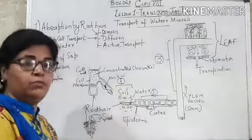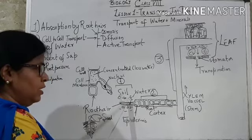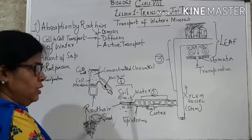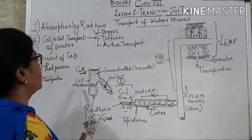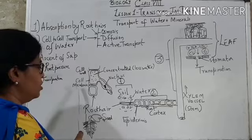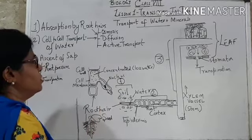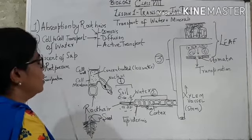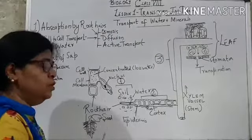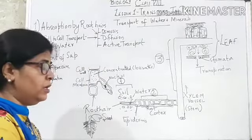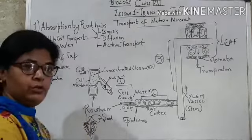Osmosis means the movement of water molecules from their high concentration in the soil to their low concentration inside the root hair. This is the inward movement of water molecules through a semi-permeable membrane, that is, the cell membrane. Osmosis takes place through the cell membrane of the root hair. The second process is diffusion — some water also moves into the root hair by diffusion, that is, movement of water molecules from high concentration in the soil to lower concentration inside the root hair. This does not need the presence of a semi-permeable membrane.